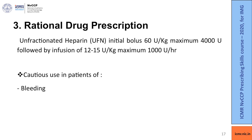The third drug to administer in STEMI patients is unfractionated heparin, with an initial bolus dose of 60 units per kg (maximum 4000 units), followed by an infusion of 12 to 15 units per kg per hour (maximum up to 1000 units per hour).